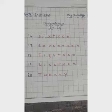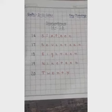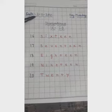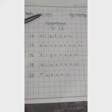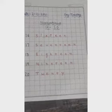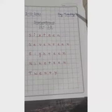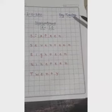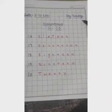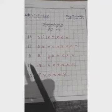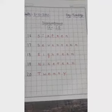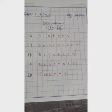Now, open your notebook and write down today's date, that is 2nd November 2021, and today's day, that is Tuesday. Then you have to make your notebook like this. Thank you.